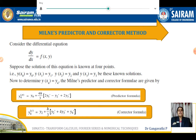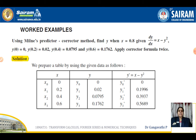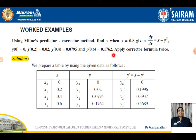Let us see some examples so that you can understand the concept better. Use Milne's Predictor-Corrector Method to find the value of y when x = 0.8, given that dy/dx = xy², y(0) = 0, y(0.2) = 0.02, y(0.4) = 0.0795, and y(0.6) = 0.1762. Apply the corrector formula twice. Usually the syllabus requires only once, so if it asks twice, do it; otherwise apply the corrector formula only once.